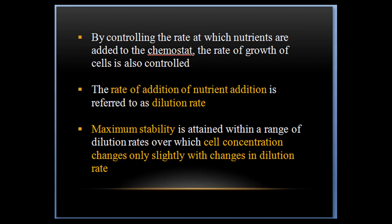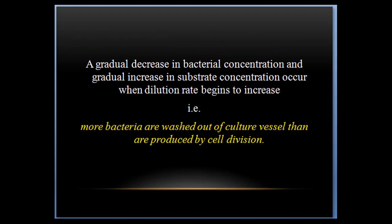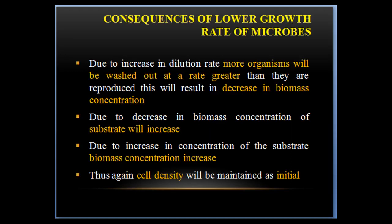The rate of addition of nutrients is referred to as dilution rate. Maximum stability is attained within a range of dilution rate over which cell concentration changes only slightly with change in dilution rate. A gradual increase in bacterial concentration and a gradual increase in substrate concentration occur when the dilution rate begins to increase — that is, more bacteria are washed out of the culture vessel than are produced by the cells.